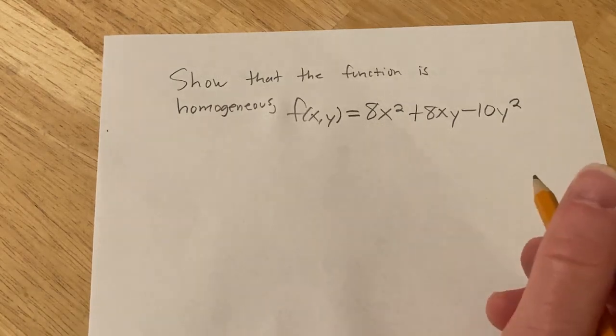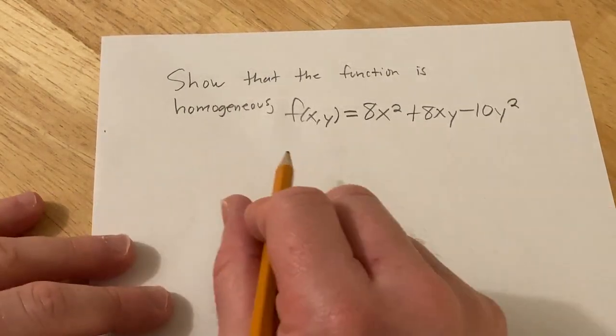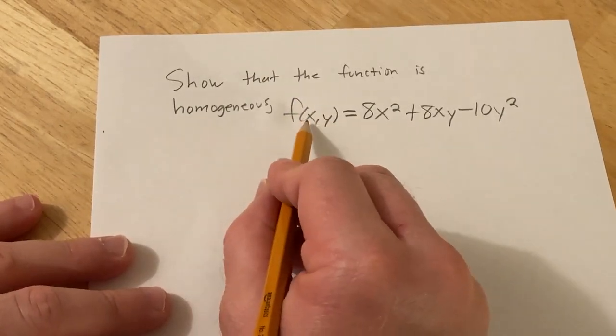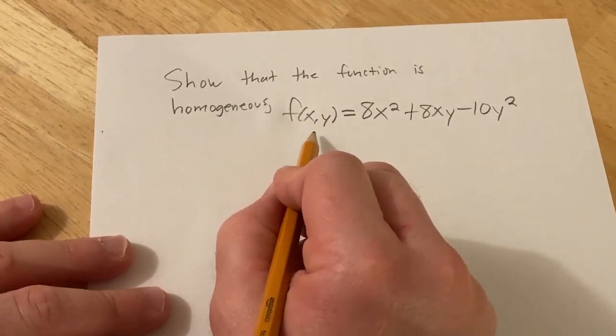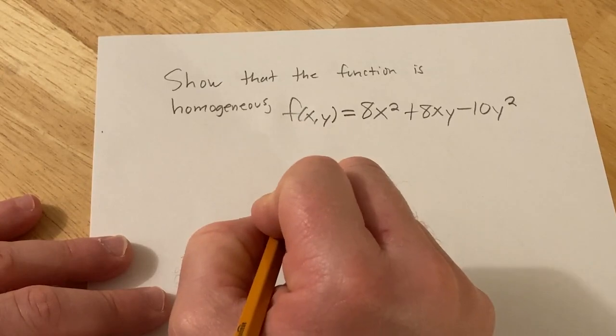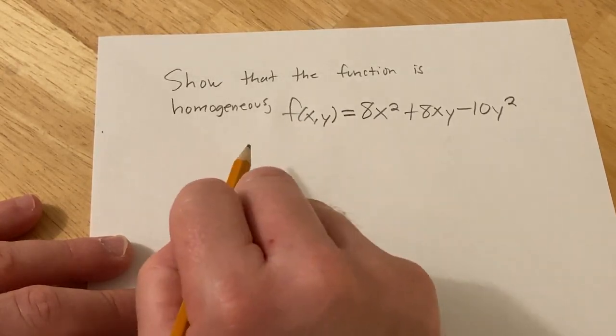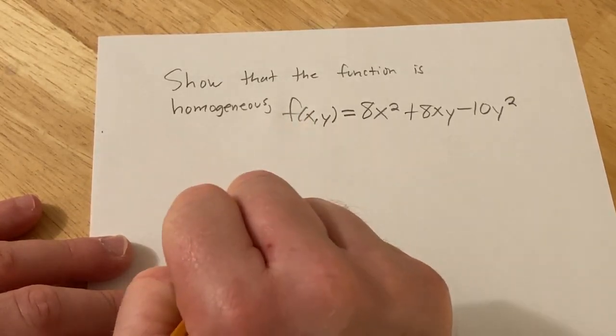In this problem we have to show that this function is homogeneous. So to do that basically we have to replace x with tx and y with ty and see if we can factor out a t and get back the original function.